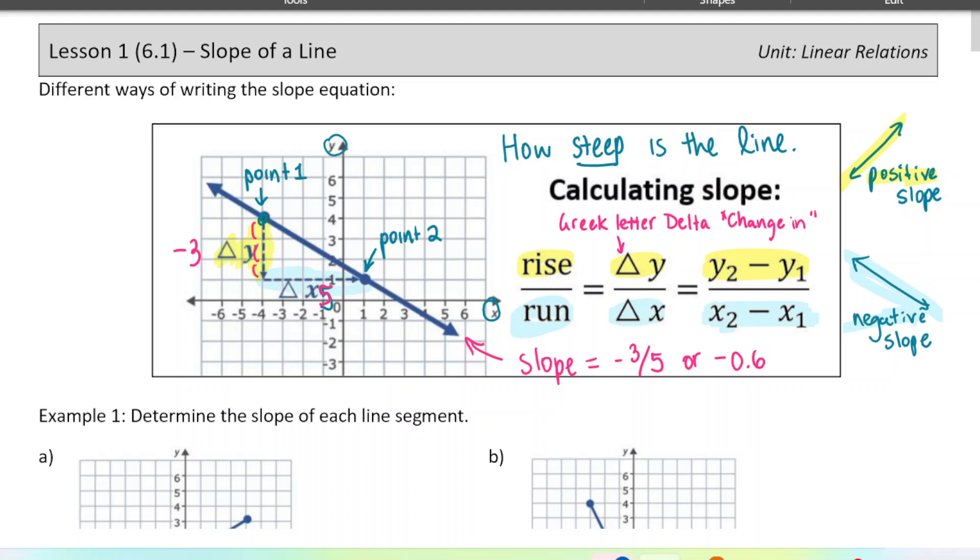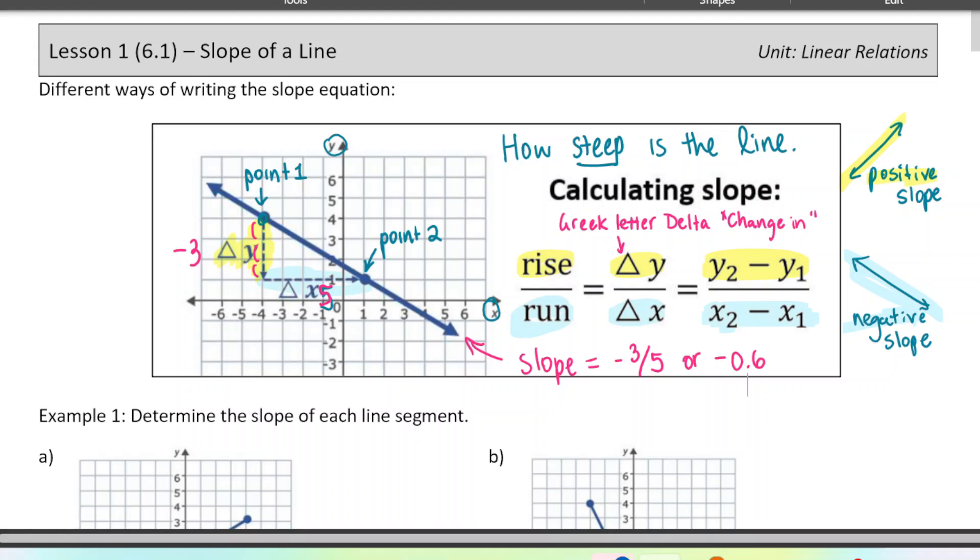That's how to calculate slope. Now the cool thing is, if you have a straight line, it actually doesn't matter which two points. The rise over run is consistent all the way along straight lines, so you can use any two points you want on the graph to calculate your slope. You'll get the same answer no matter which two points you use.